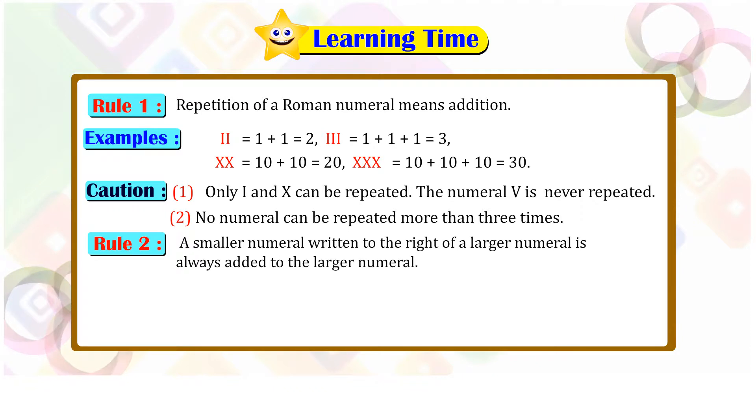Rule 2: A smaller numeral written to the right of a larger numeral is always added to the larger numeral. Below are the examples.